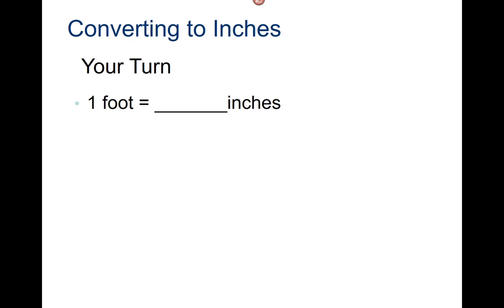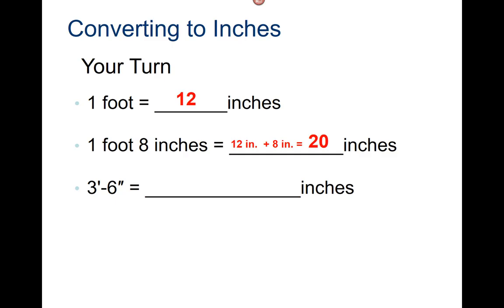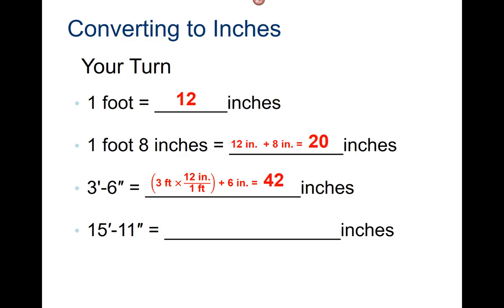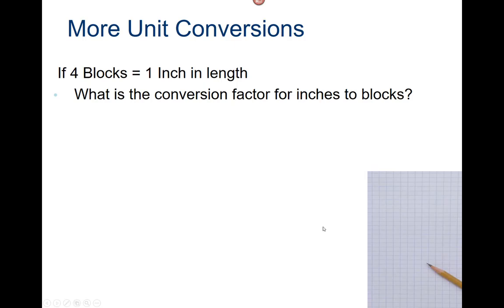Your turn. One foot equals twelve inches. One foot eight inches equals twenty inches. Three foot six inches equals forty-two inches. Fifteen feet eleven inches equals one hundred and ninety-one inches. Twenty-one feet equals how many yards? Twenty-one feet times one yard over three feet equals seven yards.